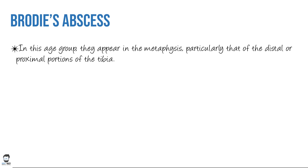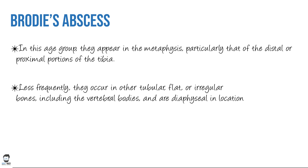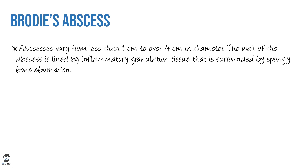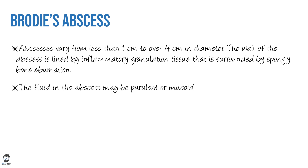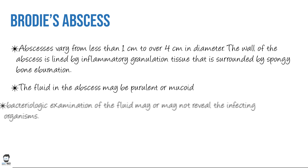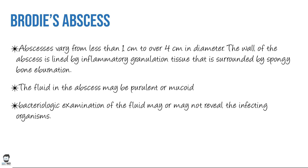In the young age group, Brody's abscesses appear in the metaphysis, particularly the distal or proximal tibia, though they can also occur in other flat, irregular, or tubular bones including the vertebrae, with a diaphyseal location in less frequent sites. Abscess size varies from less than one centimeter to four centimeters in diameter. The abscess wall is lined by inflammatory granulation tissue surrounded by spongy bone. The fluid may be purulent or mucoid, and bacteriological examination may or may not identify the infecting organism.